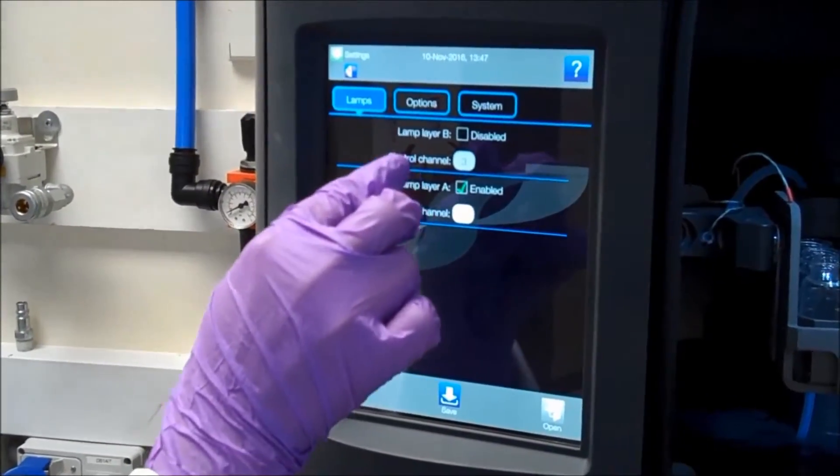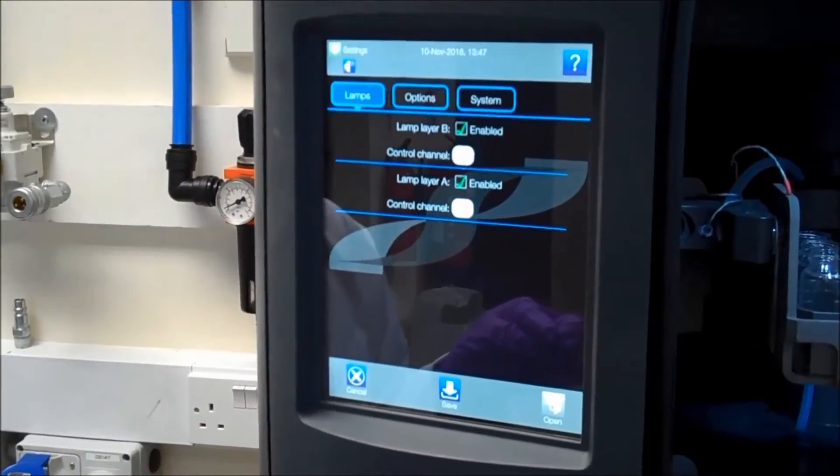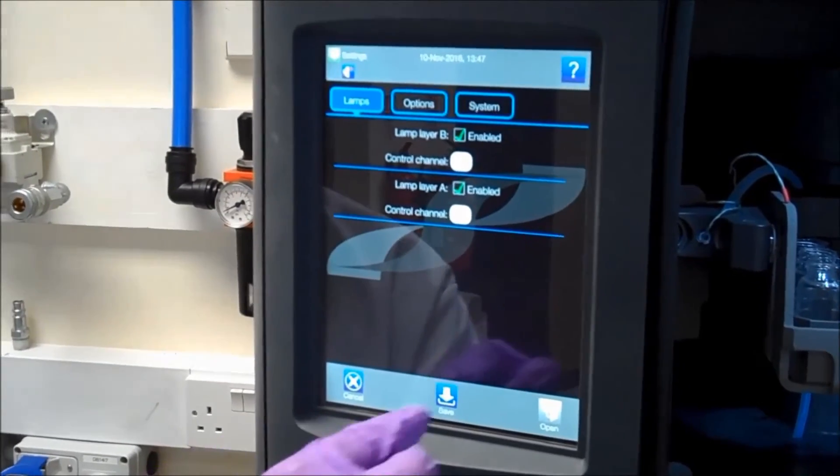Go to settings. Make sure both level lamps are enabled and save.